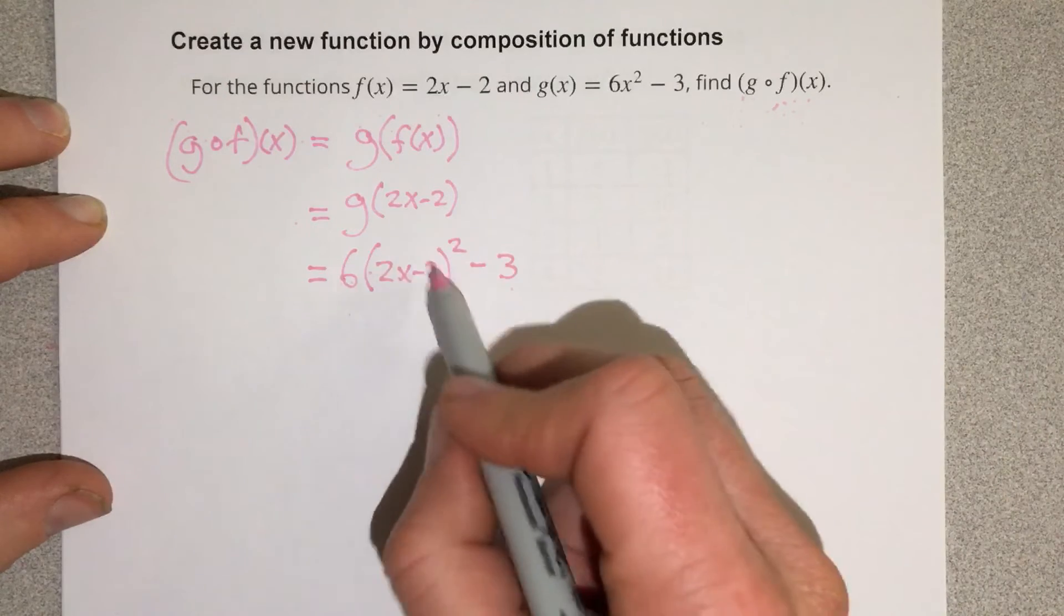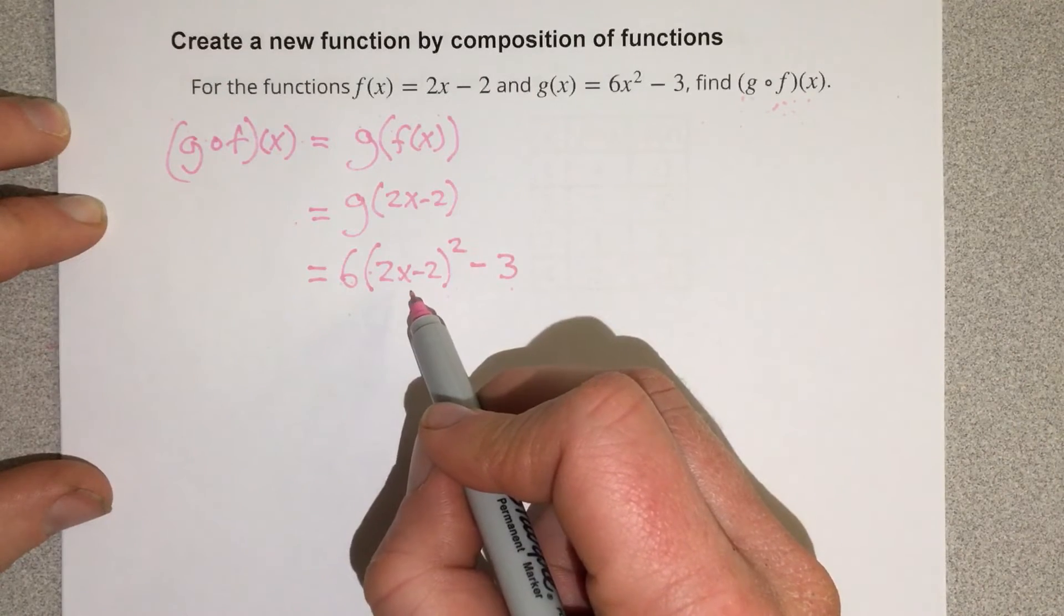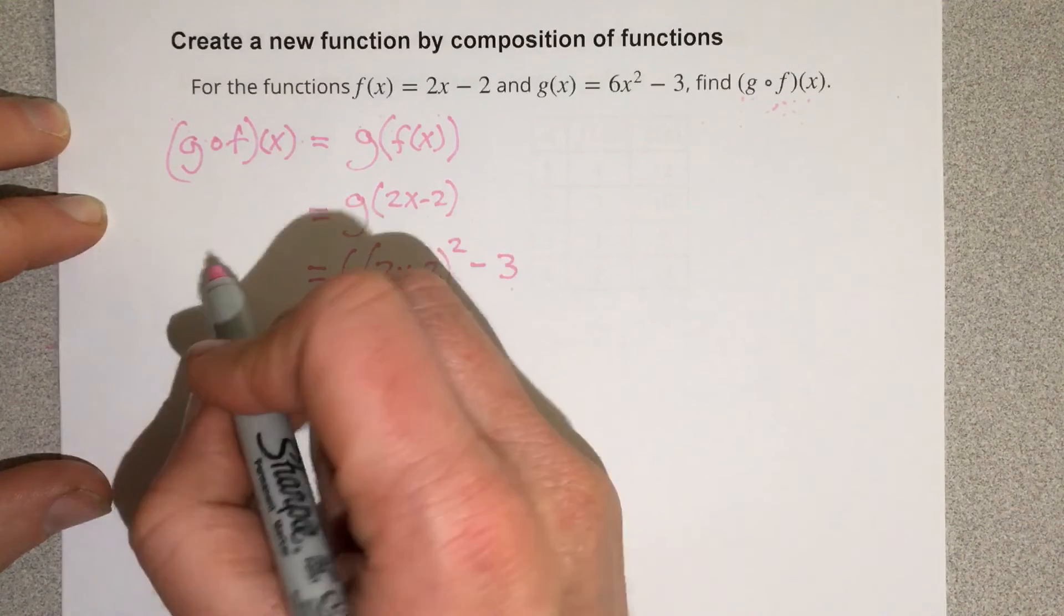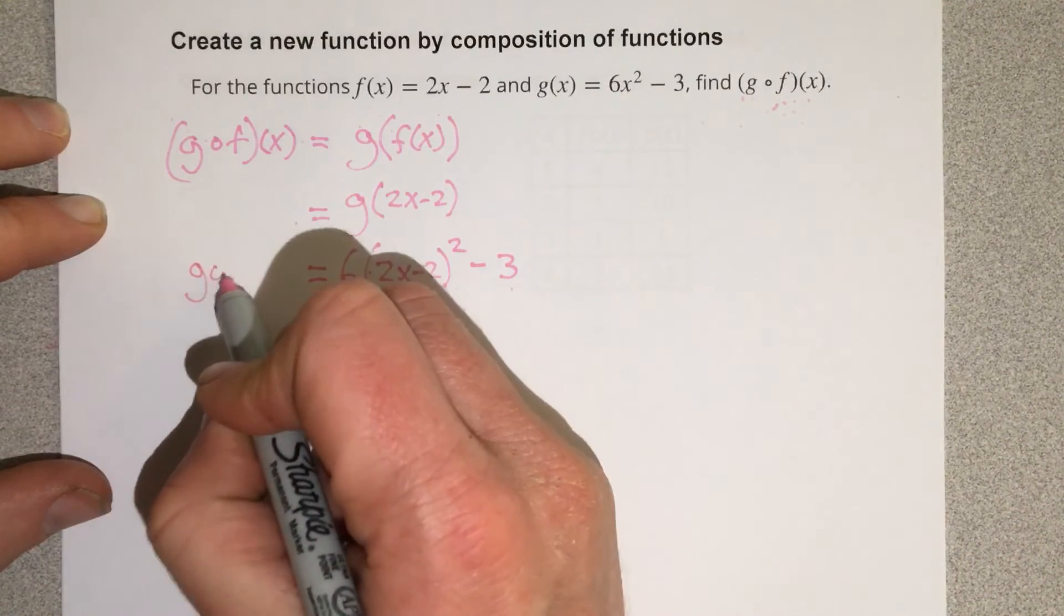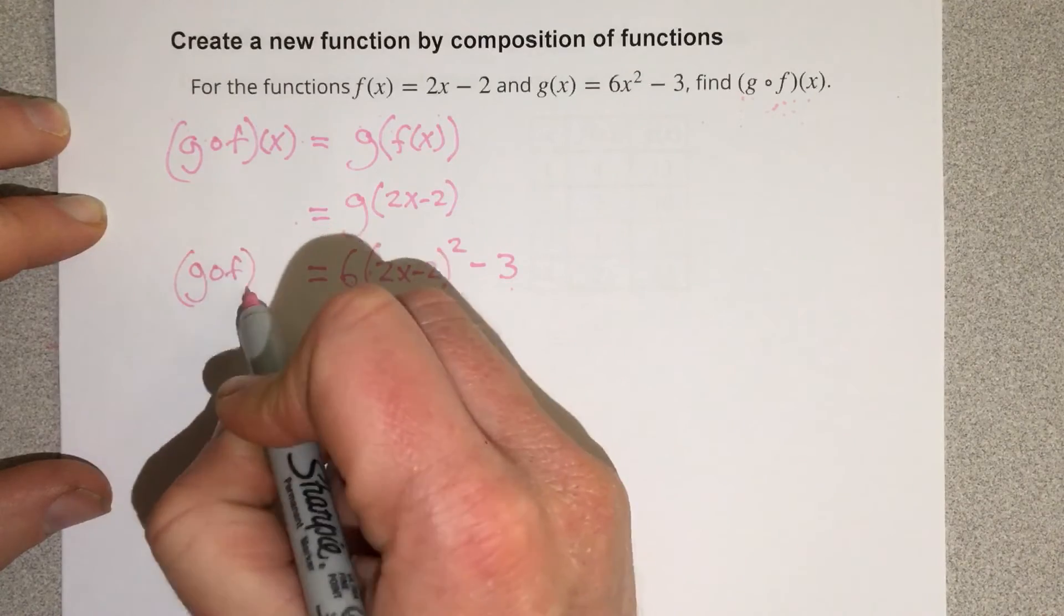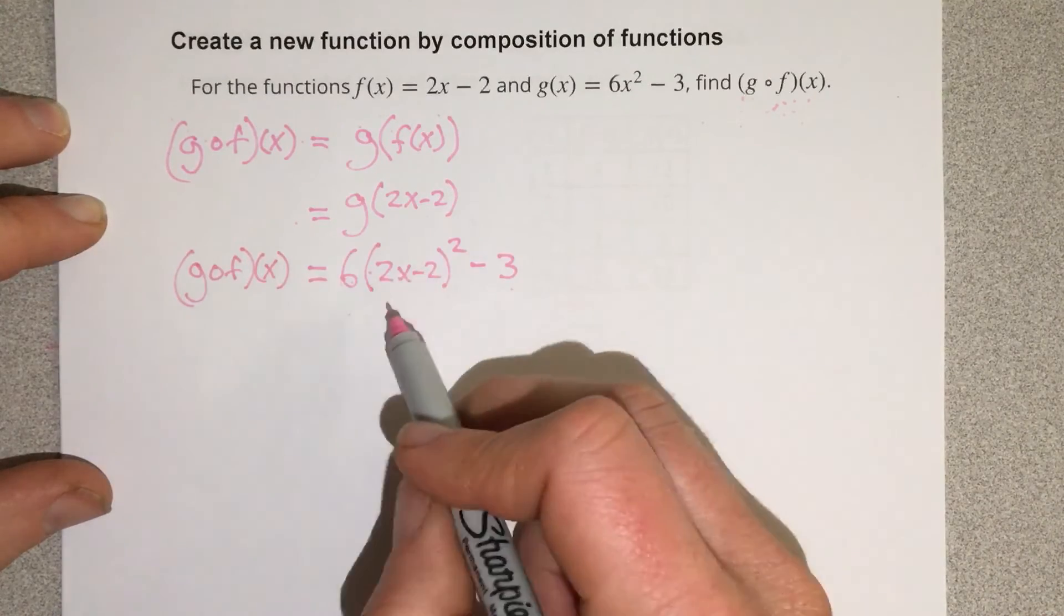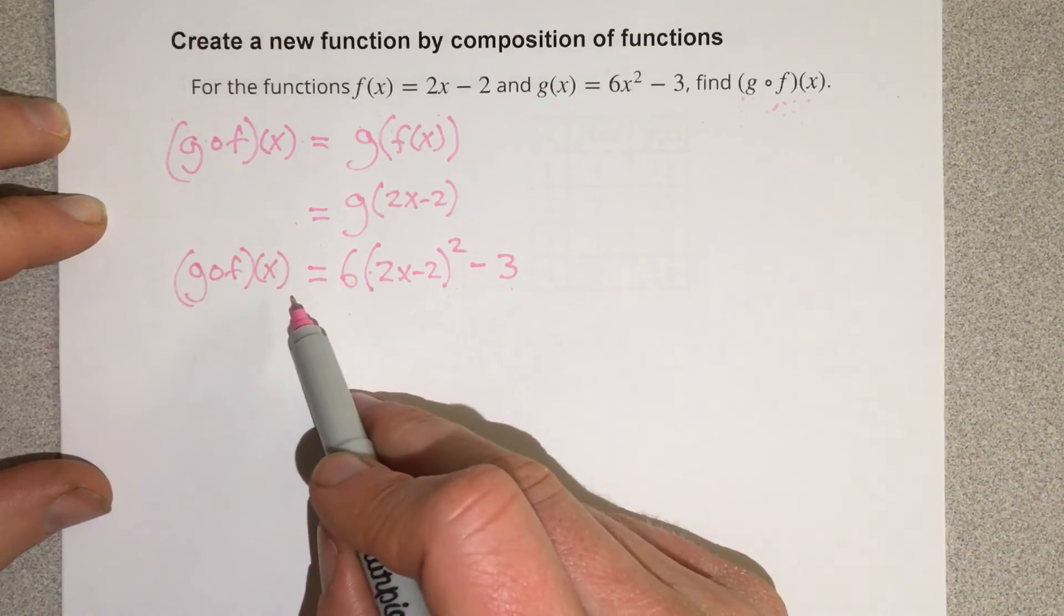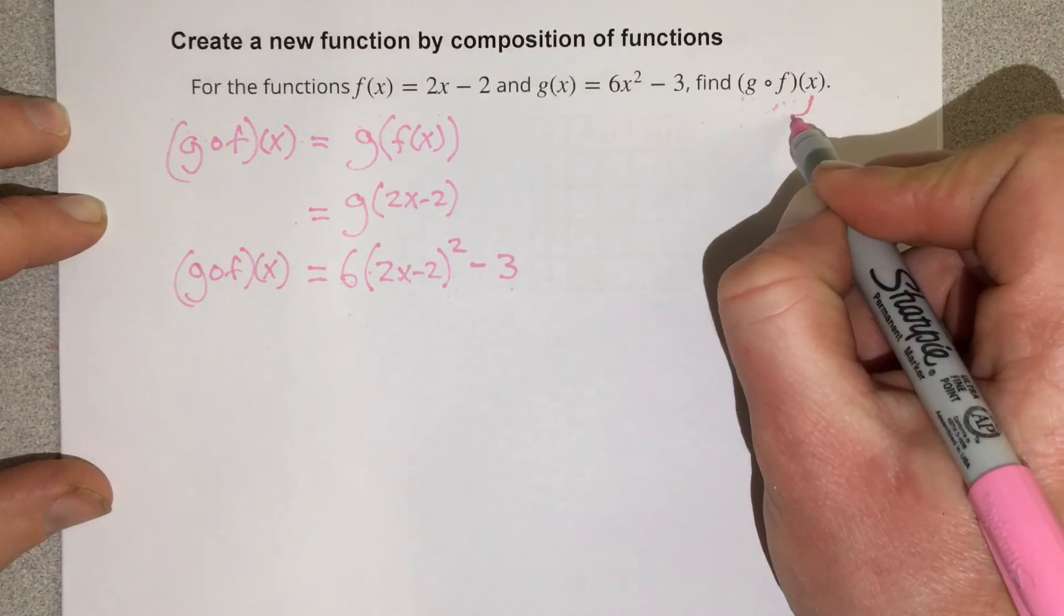Now you can distribute this out if you want. Sometimes they'll make you do it, sometimes they won't. I'm going to assume if it's squared, they'll probably make you do it. I'm going to actually just stop right there because after that, that's not really composition of functions, that's just doing some multiplication. So this is what g of f of x is. We're taking x and plugging it into f, which is then being plugged into g.